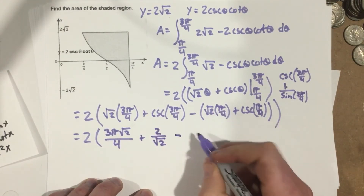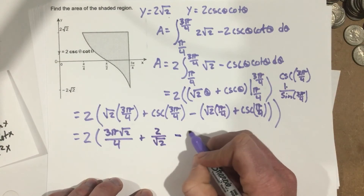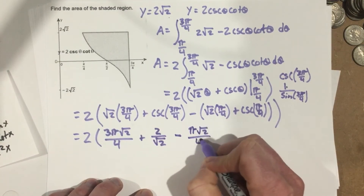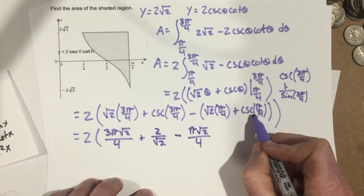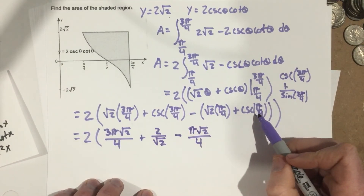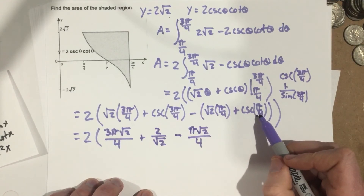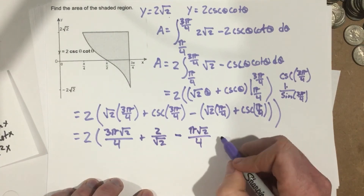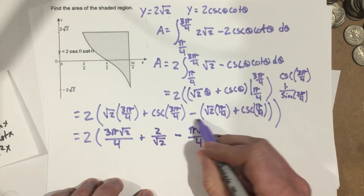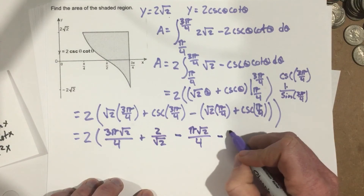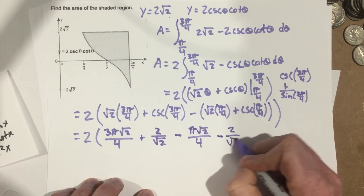Minus: when we plug in pi over 4, we get root 2 times pi over 4, which gives pi root 2 over 4, and then cosecant of pi over 4. Sine of pi over 4 is root 2 over 2, so cosecant is the reciprocal of that. When we distribute the negative, that gives us minus 2 over root 2.